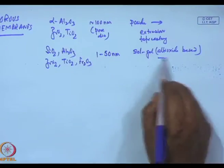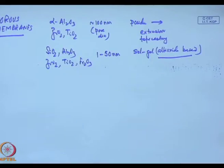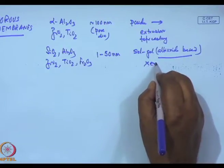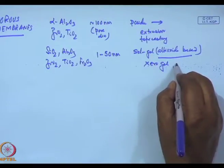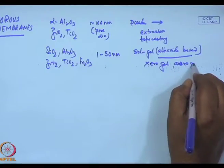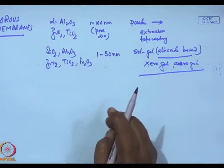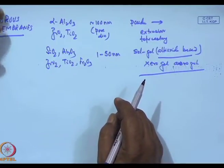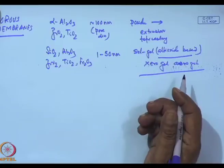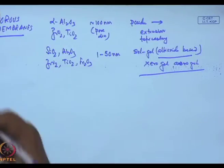Sol-gel, rather alkoxide-based sol-gel process has been used for making porous membranes of silica, alumina, zirconia, titania, iron oxide with particle size range of 1 to 50 nanometers. Here you should remember, I talked of xerogel and aerogel. I talked of an alkoxide gel as xerogel and aerogel. And now you should be able to understand why the aerogel will be able to filter out finer gases, smaller molecular weight gases, while xerogel can be used for larger particles.